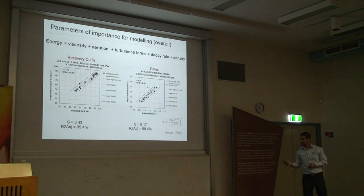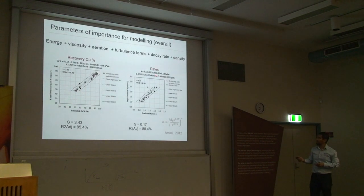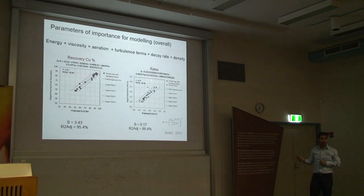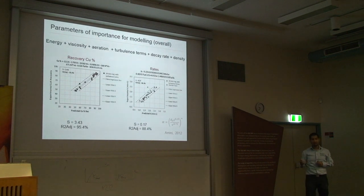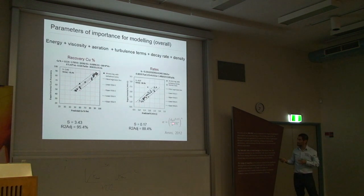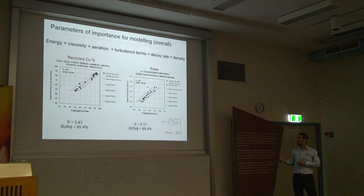I also put Eymann's term in my regressions. His term involves bubble size, kinematic viscosity, and specific energy dissipation. My feeling is that it's being picked up because of the viscosity component — and we need to explore this more.